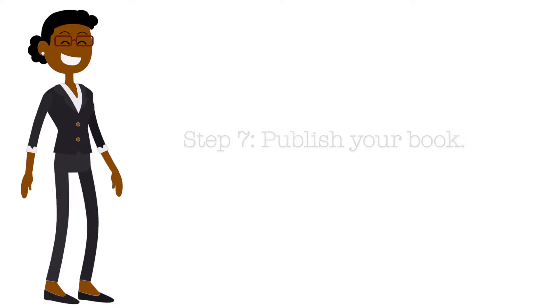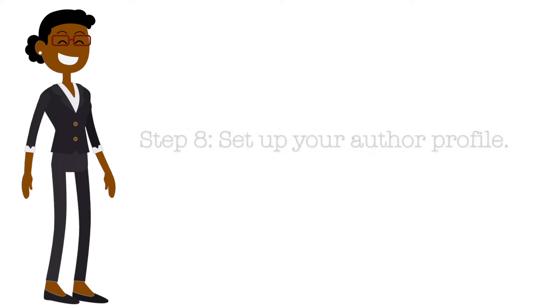Step number seven is to publish your book. Once you have set your book's price and royalty options, it's time for your book to go live, which means it's published and ready to be purchased by your target audience. Each platform has its own instructions for publishing, so make sure to read the steps carefully before publishing. Step number eight is to set up your author profile. Many self-publishing platforms allow you to set up an author profile — for example, Amazon has Amazon Author Central, which allows readers to access your previous books, learn more about you, and gives you more visibility on the platform.